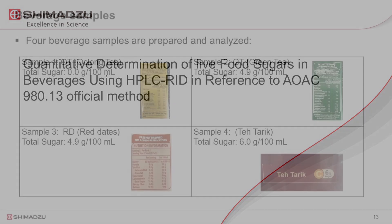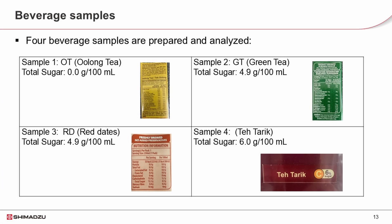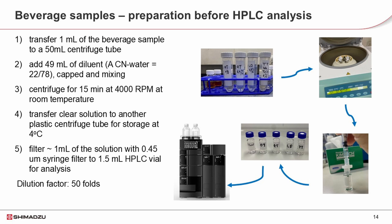Four beverage samples were obtained from the local market. The oolong tea has no sugar as labeled. Green tea and red date samples contain 4.9 g per 100 ml, and the teh tarik contains 6.0 g per 100 ml as labeled. Transfer 1 ml of each sample and dilute it with diluent by 50 times. The samples are centrifuged at 4000 rpm for 15 minutes and then filtered with a 0.45 µm syringe filter into HPLC sample vials.